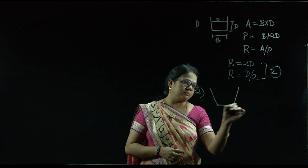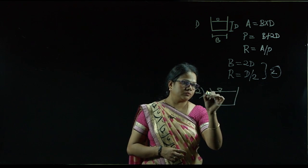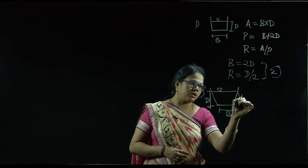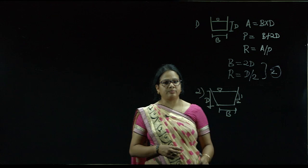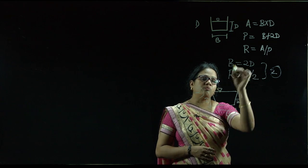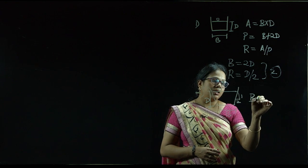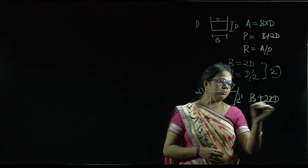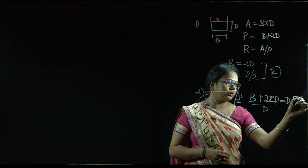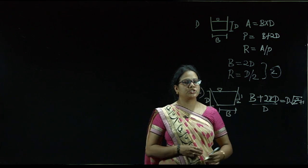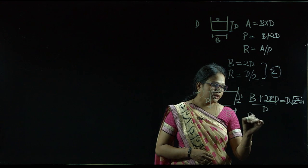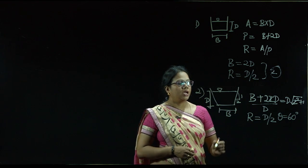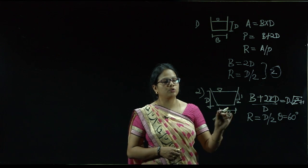The second is the trapezoidal section having depth D, base B, and a bed slope of 1:Z. For the most economical trapezoidal channel section, the condition is (B + 2ZD)/D = √(Z² + 1), the hydraulic radius R = D/2, and the angle θ = 60°. If these conditions are satisfied, it is the most economical trapezoidal section.